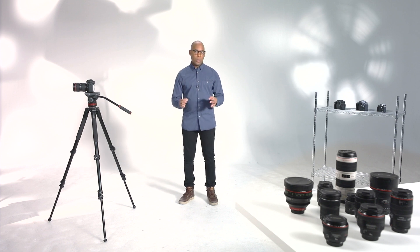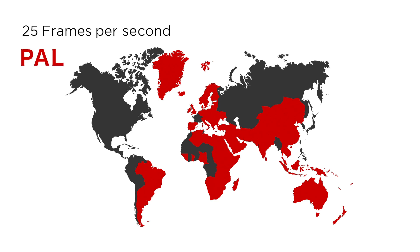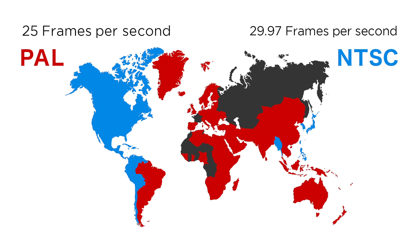The frame rate you select when recording depends on the region you live. In Europe, Oceania, Africa, South America, and most of Asia, television broadcasts at 25 images or frames per second, also known as PAL. Whilst in North America, Canada, and Japan they use 29.97 frames per second, which we call 30 frames per second, and it's known as NTSC.